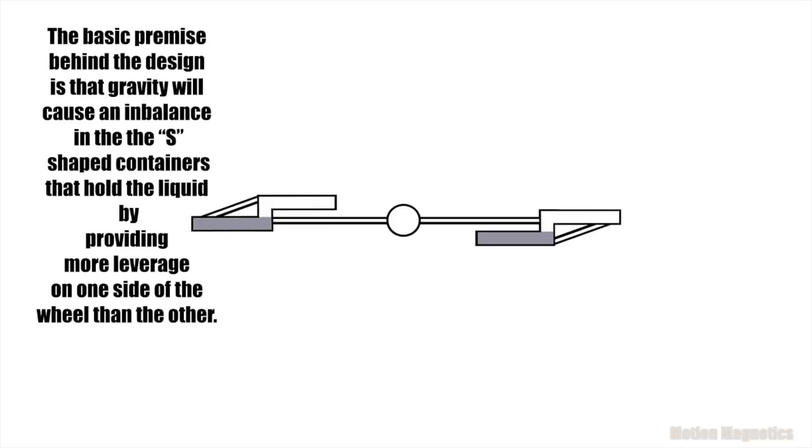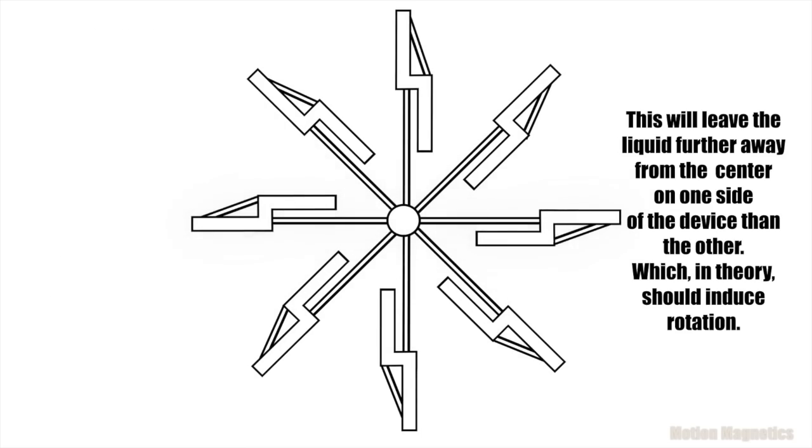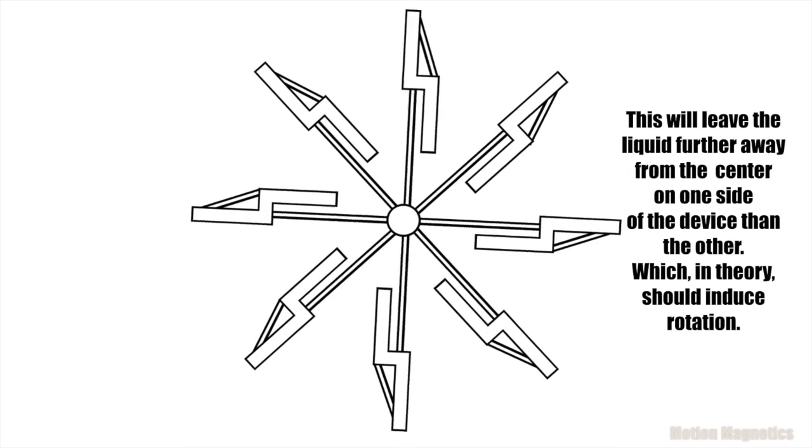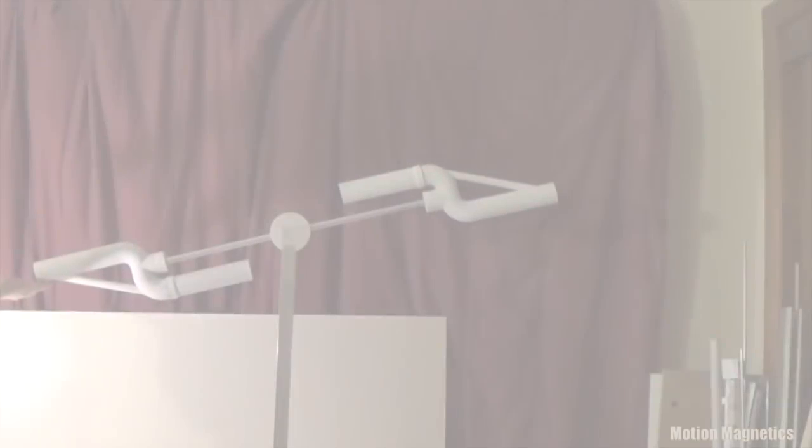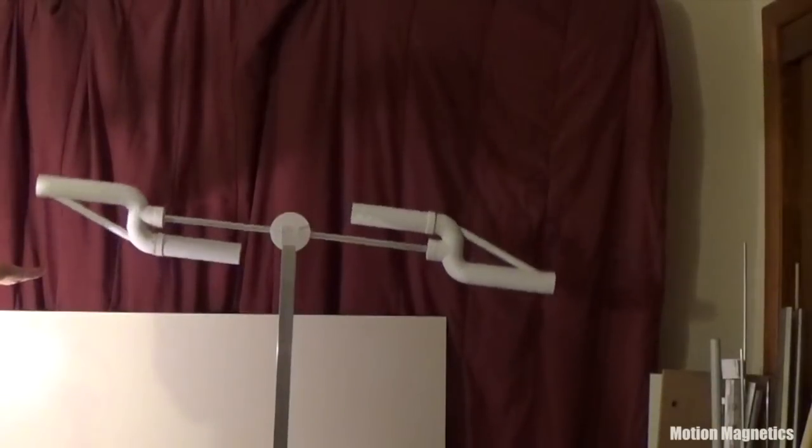Basically what I'm doing in this video and part 1 is attempting to build a rotary system that displaces liquid in such a way as to create an imbalance by redistributing the liquid closer to the center of the rotor on one side and further away on the other. So the device makes use of gravity and leverage, which if done properly, should induce rotation.